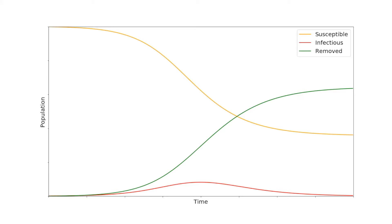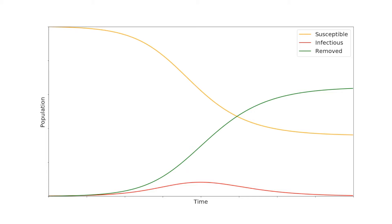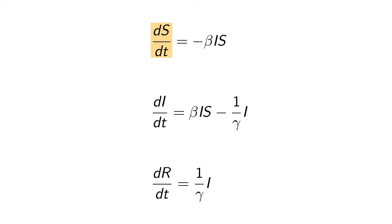The lines on this graph are described by the differential equations that make up the SIR model. A quick look at these equations and the parameters they depend on will show us how viruses with different properties can spread through populations in very different ways. These are the differential equations that define how the susceptible, infectious, and removed populations change over time. These terms are derivatives, which essentially just means change over time. The dS/dt term means change in susceptible population over time, and so on.